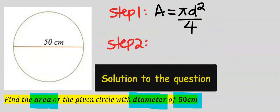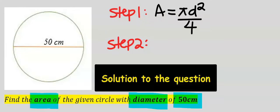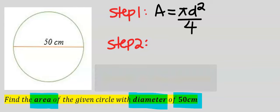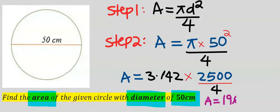After writing out the formula, the next step is to substitute. The area of this circle is 1963.75 centimeters squared to two decimal places and six significant figures.